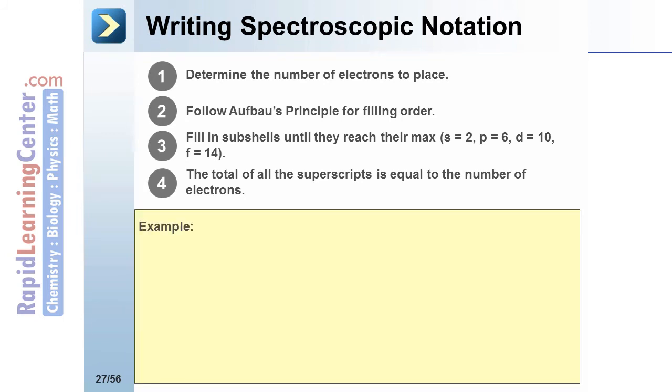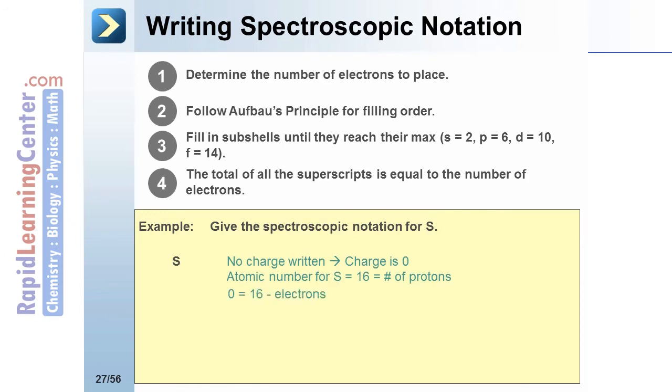For example, give the spectroscopic notation for sulfur. No charge is written, therefore it's zero. The atomic number is 16. Zero equals 16 minus electrons. We need to place 16 electrons.